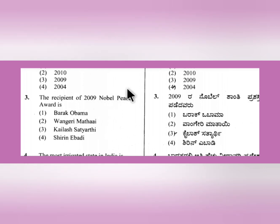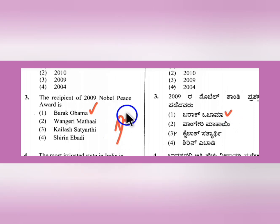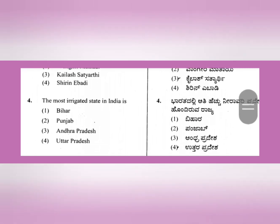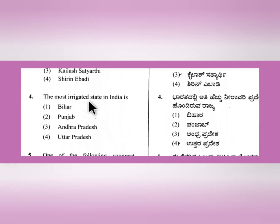Question 3: The recipient of the 2009 Nobel Peace Prize was Barack Obama. He is from the Democratic Party and worked for unity and peace among the people, which is why he received the Nobel Peace Prize. Question 4: The most irrigated state in India is Uttar Pradesh, which has the highest irrigation coverage.